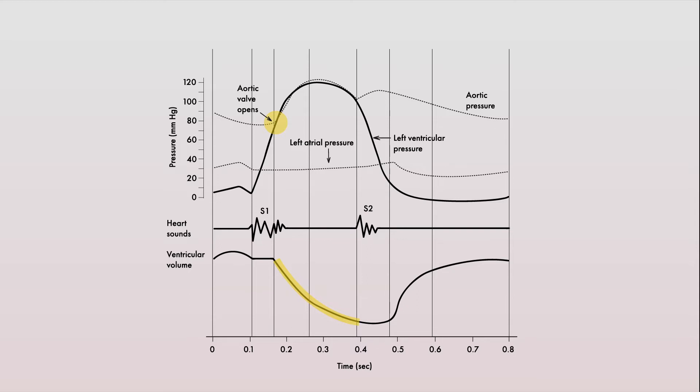This period from aortic valve opening and aortic valve closure is called the systolic ejection phase of systole. It is marked by the decrease in volume within the ventricles as a result of it being pushed out into the aortic and pulmonary outflow tracts.